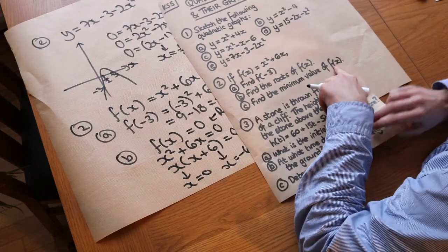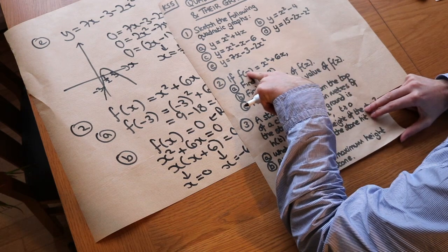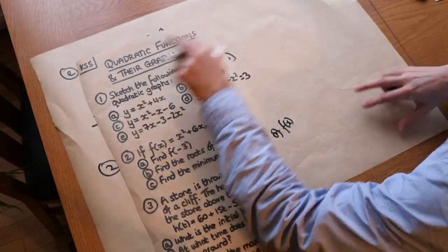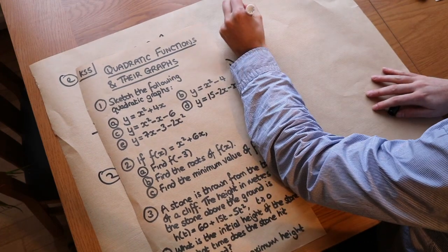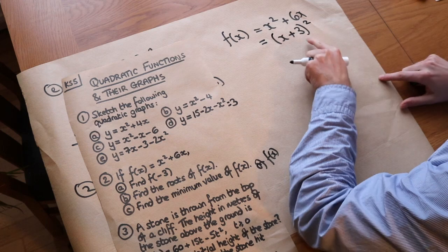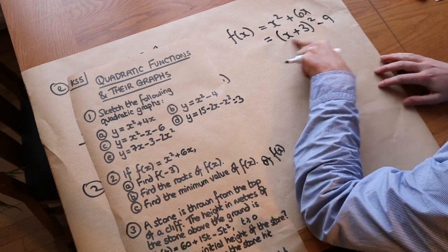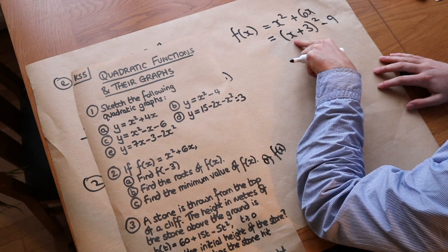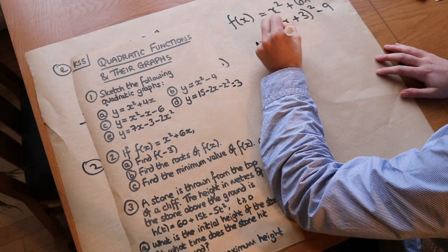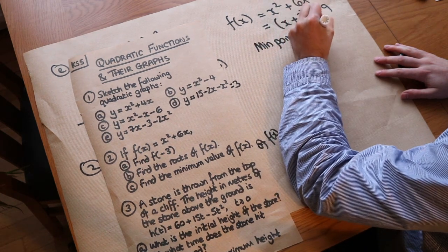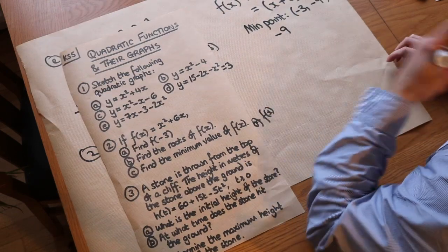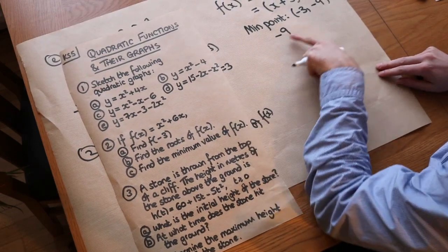To find the minimum value of f(x) we complete the square. Halving the coefficient of x gives (x plus 3) squared, and we subtract 3 squared to compensate: (x plus 3) squared minus 9. Expanding (x plus 3) squared gives x squared plus 6x plus 9, and subtracting 9 cancels that extra term. The minimum point occurs at x equals minus 3 with a minimum value of minus 9.